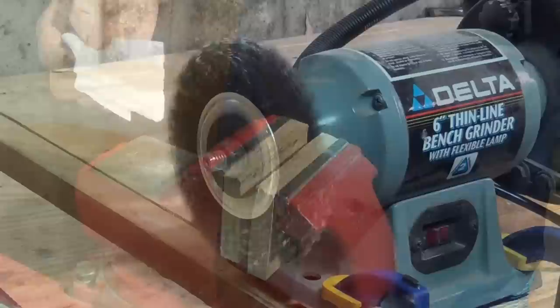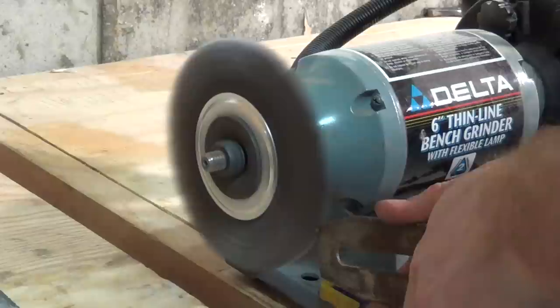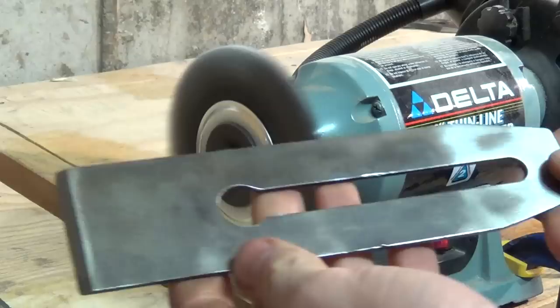The blade had some of the hardest corrosion to remove, but the wire wheel did a good job removing that. It's kind of cool because you can see the different types of steel after it's all cleaned off. The edge has a much harder steel than the back of the blade does.